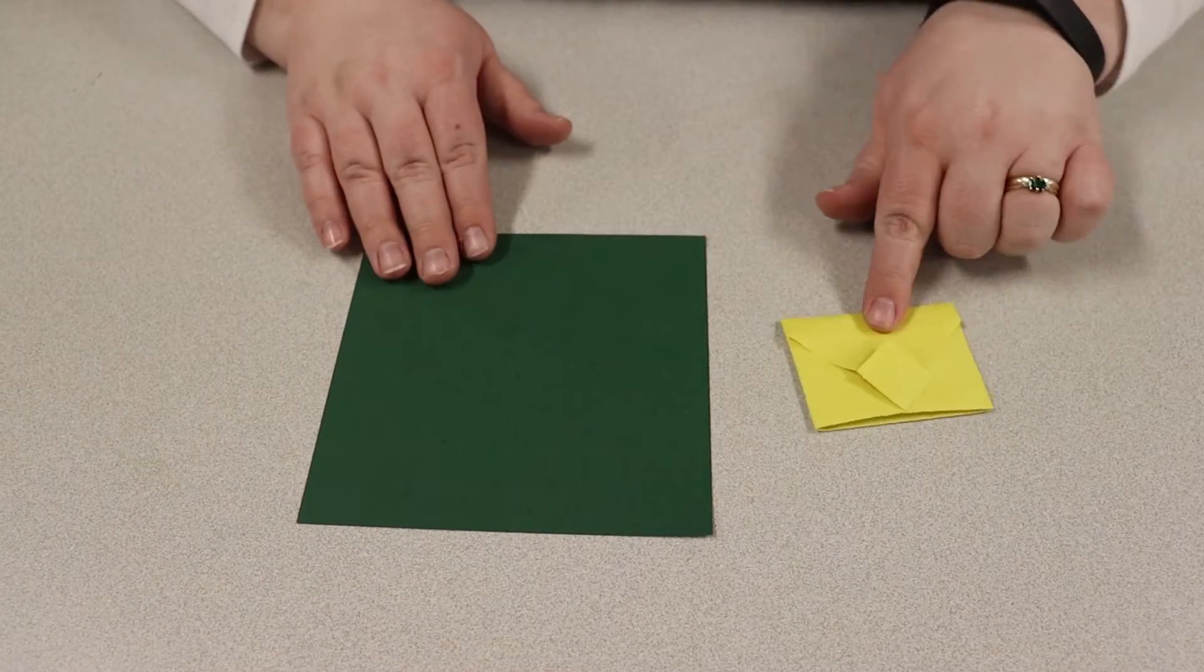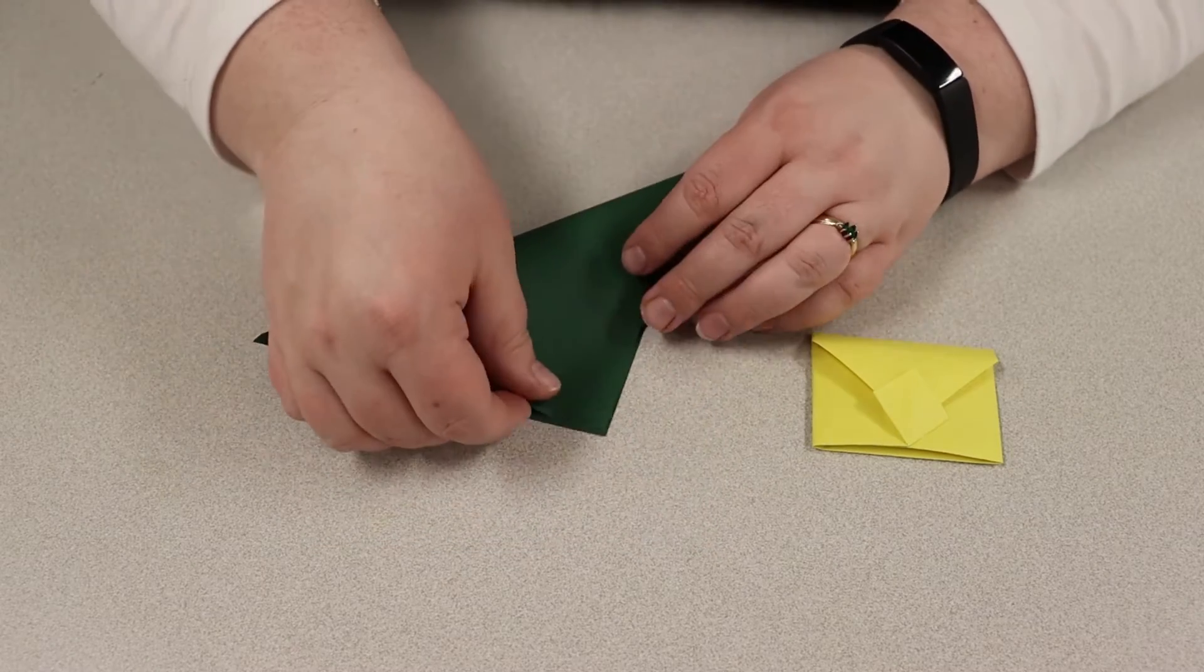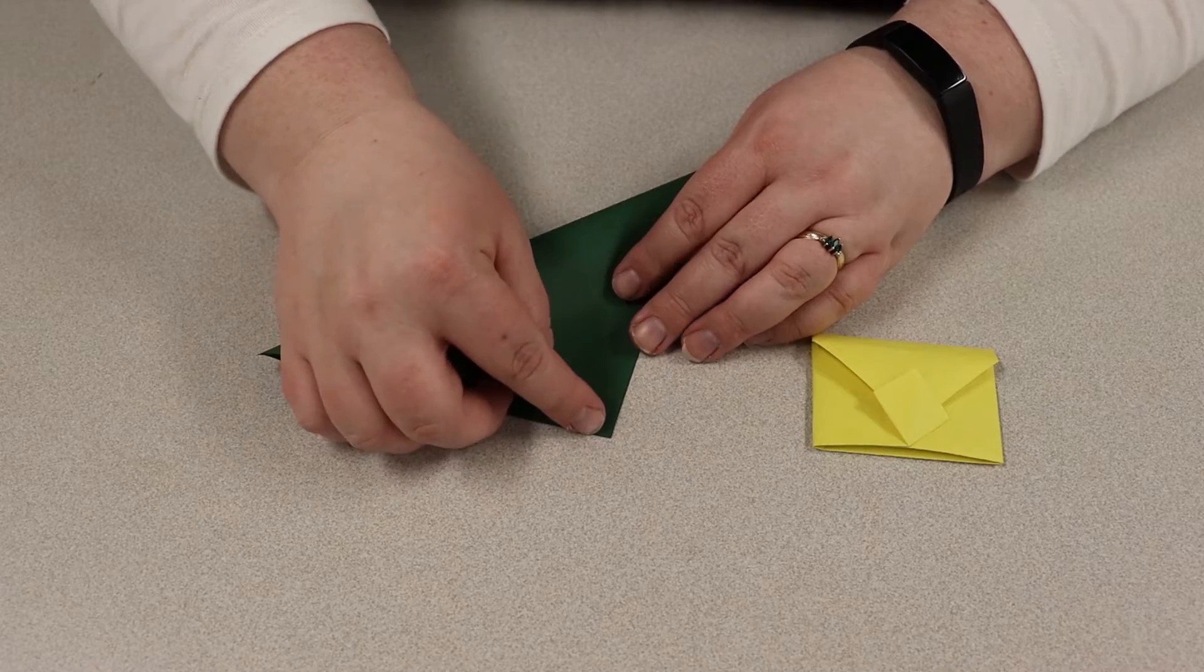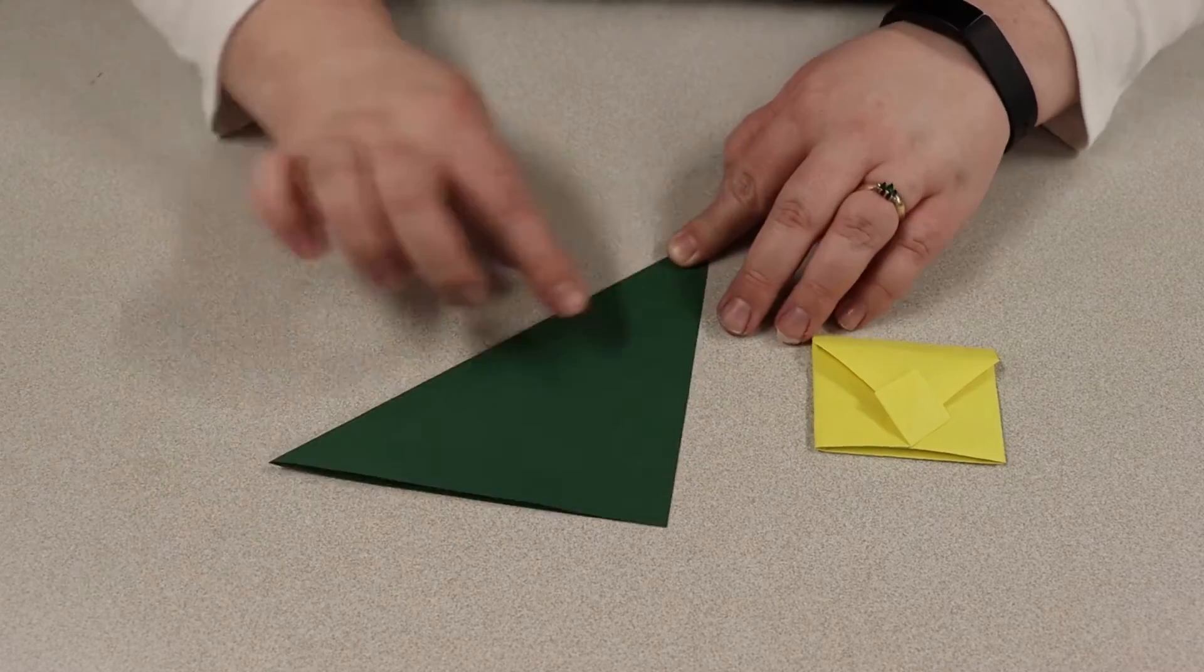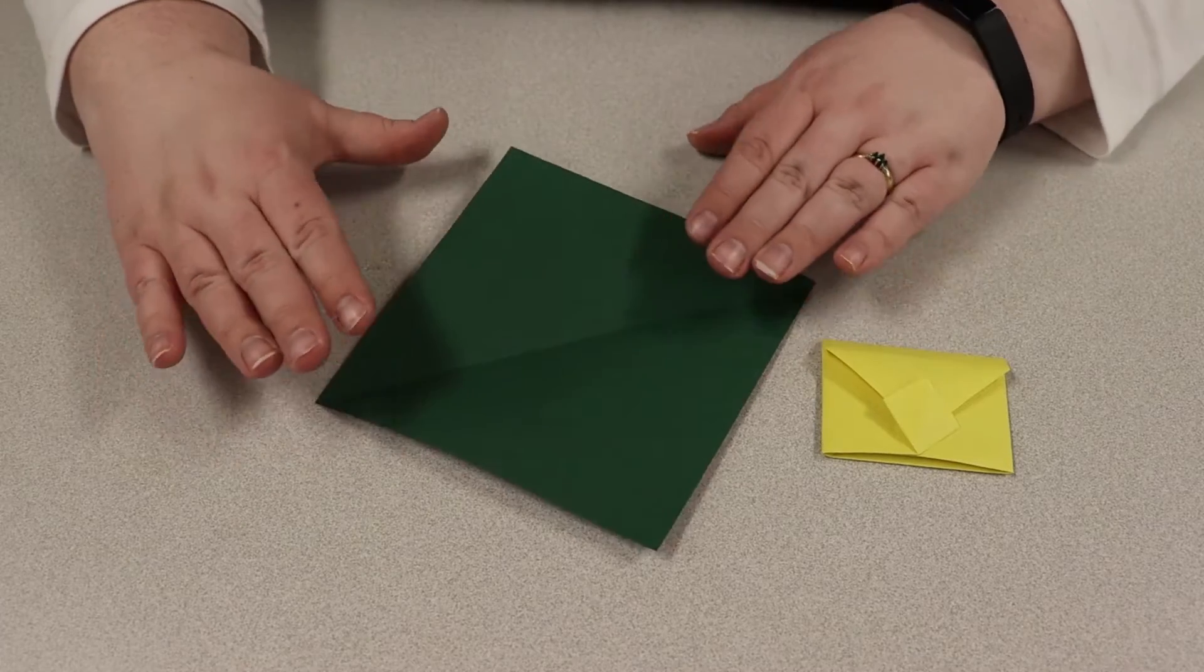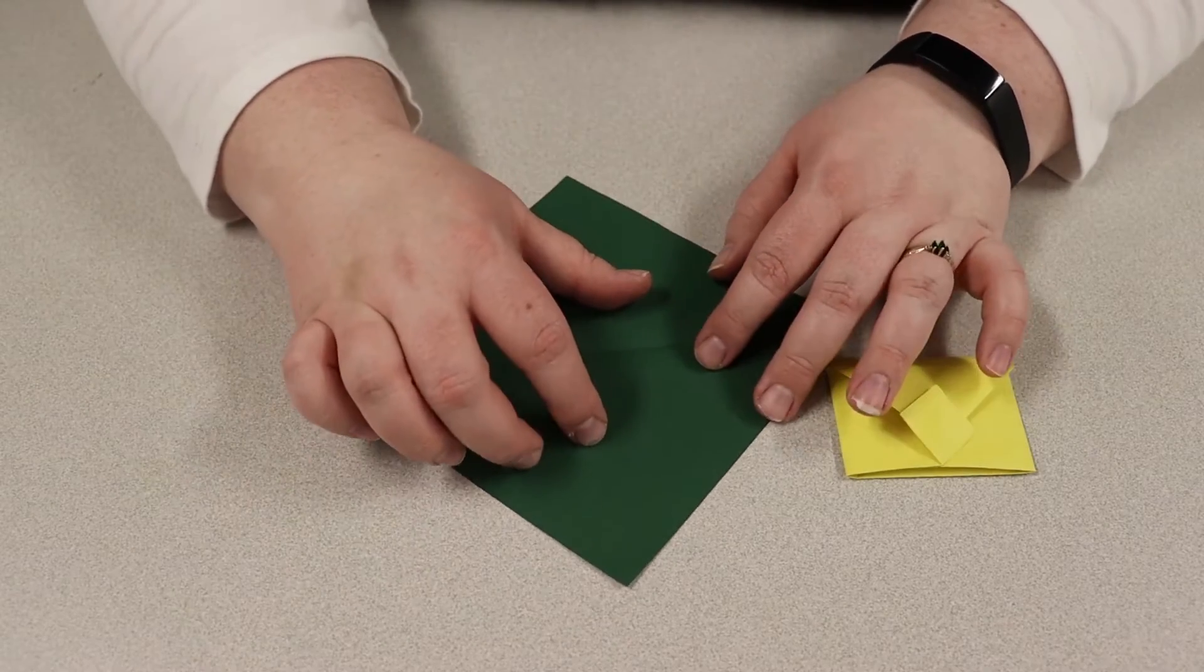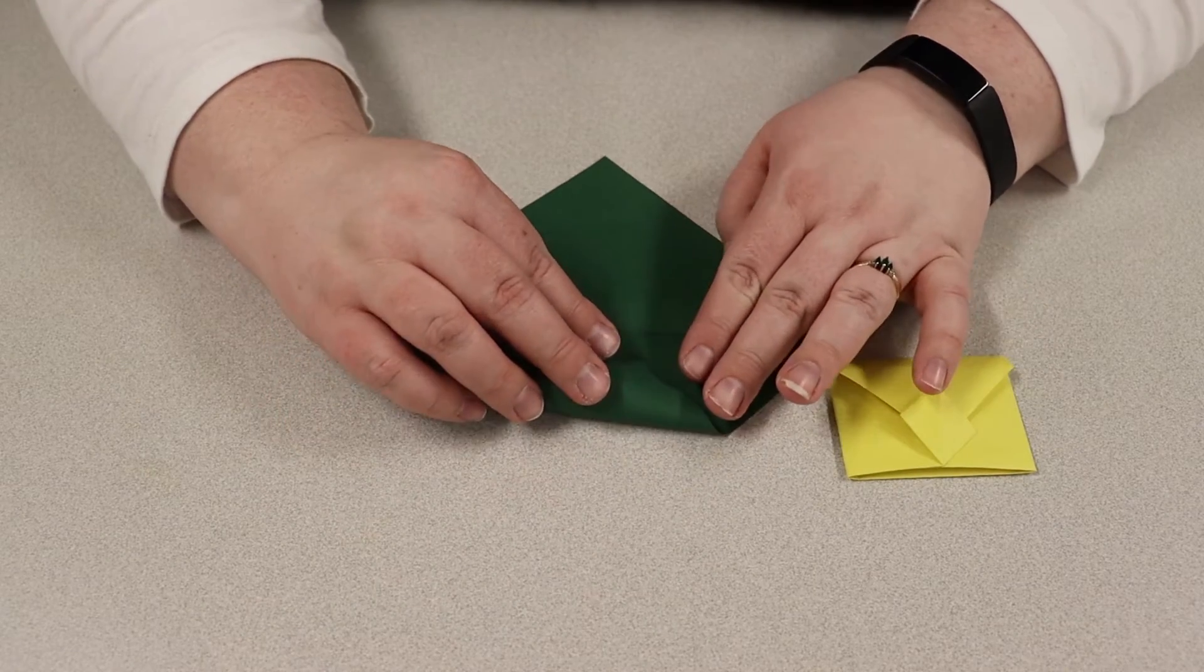Okay, so these fun little envelopes are super easy to make here. So we're going to take our square and we're going to fold it into a triangle here. Nice and easy. We're going to open this back up, we're going to then take one side, we're going to determine which one we want to be our bottom, and we're going to fold that up to the middle.